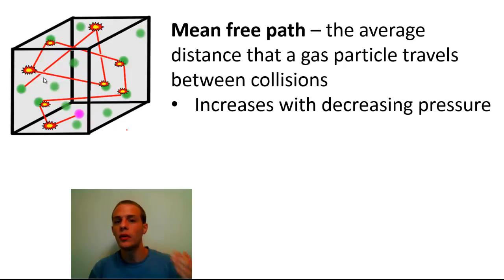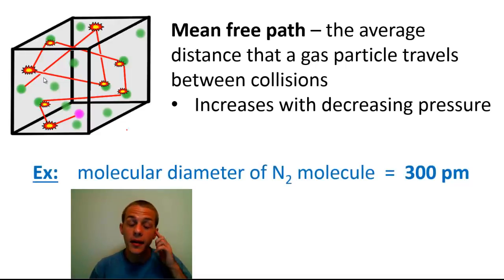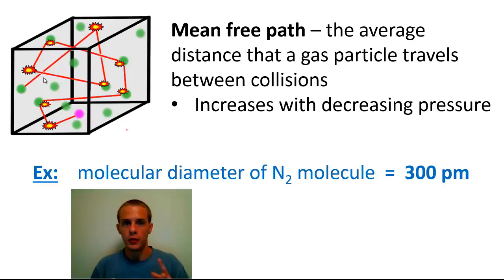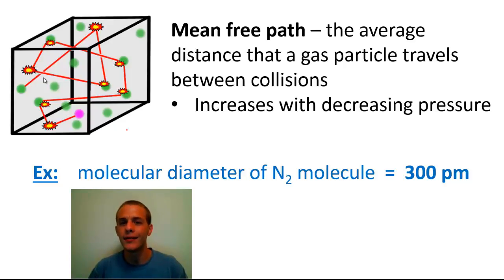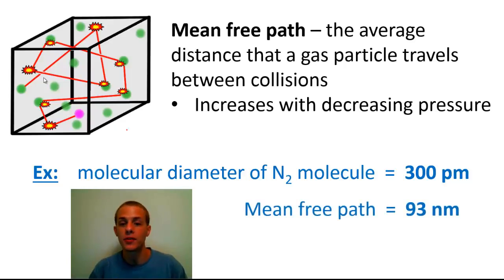To give some perspective on mean free path, consider a sample of nitrogen gas at room temperature and atmospheric pressure. To understand mean free path we need to know both the size of the nitrogen molecules and how far they travel before the next collision. The molecular diameter of a nitrogen molecule — remember nitrogen is N₂, not just one atom — is 300 picometers, where pico means 10 to the minus 12. The mean free path of nitrogen at room temperature and atmospheric pressure is 93 nanometers, where nano means 10 to the negative 9.